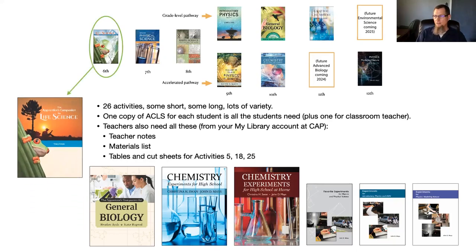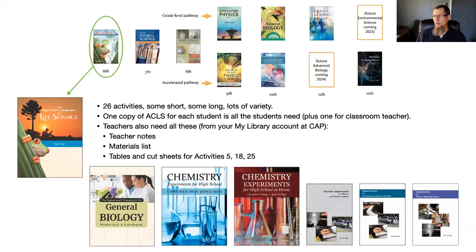For Life Science, the Apprentice's Companion for Life Science is the main thing you need. It includes 26 activities — some short, some long, with a lot of variety. You need one copy per student, and classroom teachers need their own copy. Homeschoolers can use one copy for everyone involved. Teachers also need additional resources in their My Library account when they buy the Apprentice's Companion: a Teacher Notes document, a materials list, and three sets of tables or sheets for activities 5, 18, and 28.